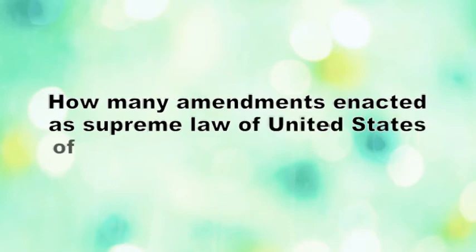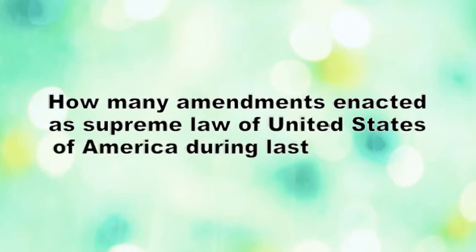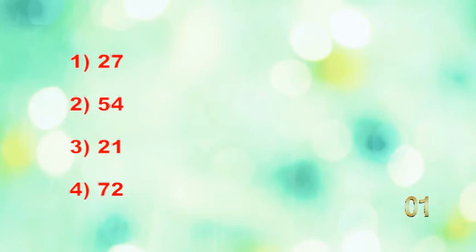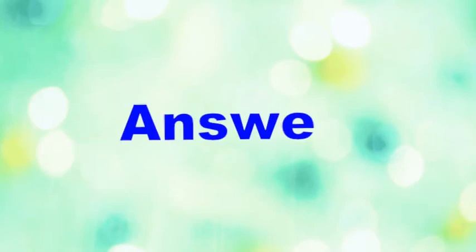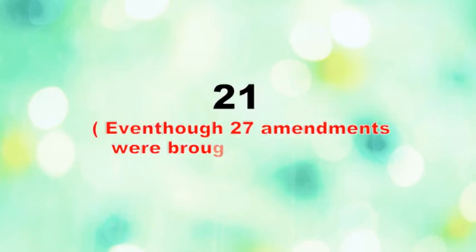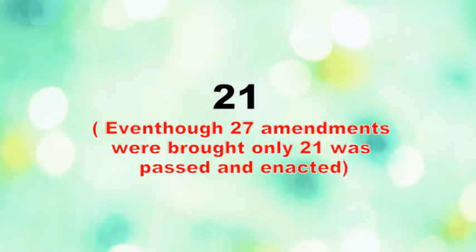Question 17: How many amendments were enacted as supreme law of the United States of America during the last 233 years? 1. Twenty-seven. 2. Fifty-four. 3. Twenty-one. 4. Seventy-two. Answer: 21 — even though 27 amendments were brought, only 21 were passed and enacted.